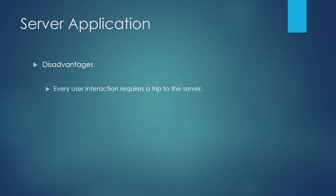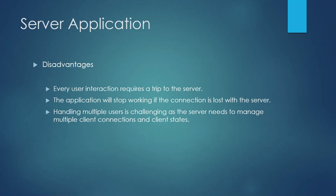The disadvantages of a Blazor Server application: one major disadvantage is that every interaction the user performs always requires a trip to the server. The execution logic is present on the server, so for example if the user clicks a button, the request goes to the server, gets executed there, and the response comes back. Because of this, if the connection between the browser and server is lost, the whole application stops working.